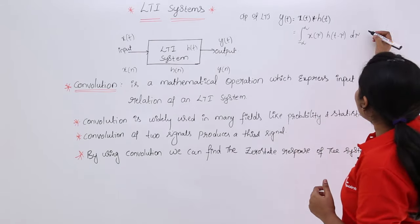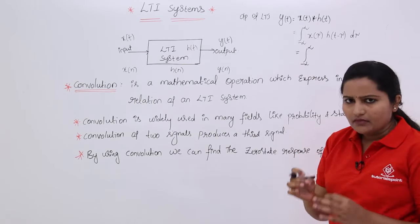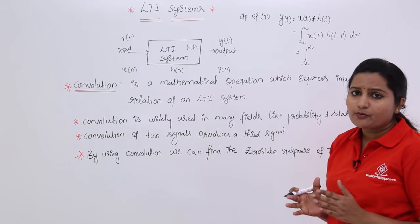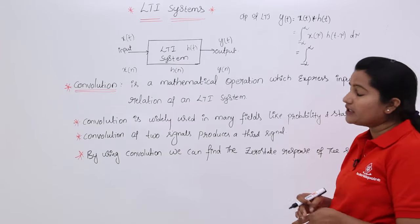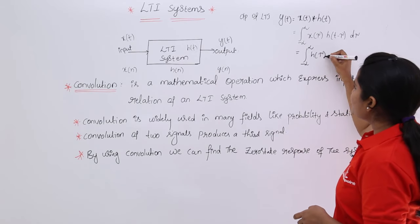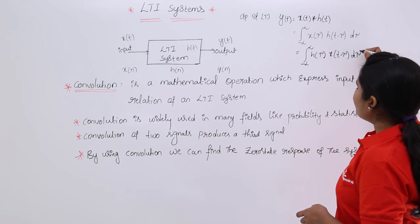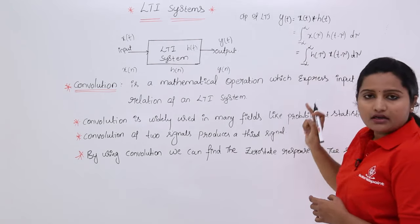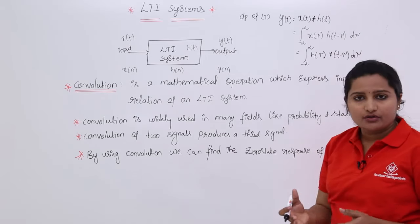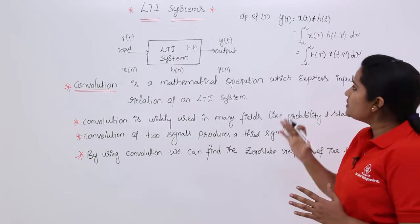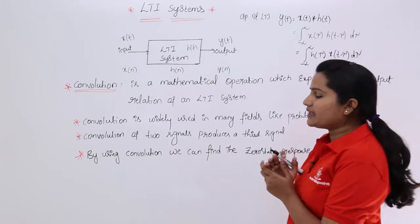Convolution is commutative. That means instead of folding and shifting h(t), you can keep h(τ) as it is and fold and shift x(t) instead. So you can also write the continuous convolution as the integral from minus infinity to infinity of h(τ) · x(t − τ) dτ, and you will get the same result.